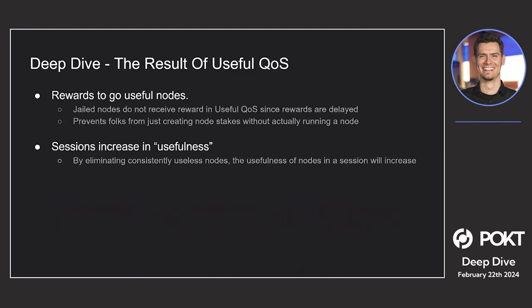The result is rewards go only to useful nodes. Jailed nodes don't receive rewards since rewards are delayed. This prevents folks from creating node stakes without actually running nodes — right now in Grove's sessions, many nodes aren't even running. They're just node stakes on-chain from people who shut down their node but didn't go through the unstaking process. With this model, those dead nodes would be completely taken out from the get-go.